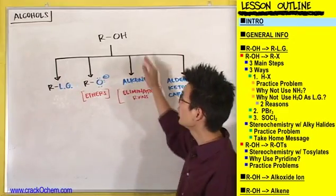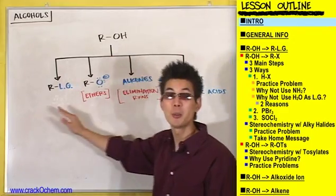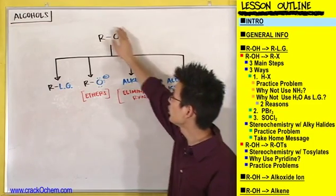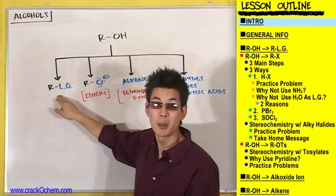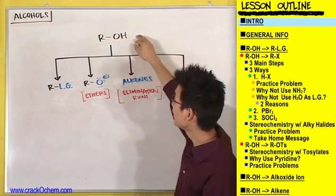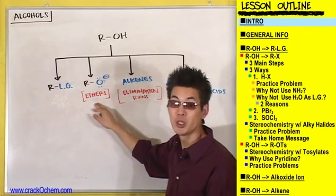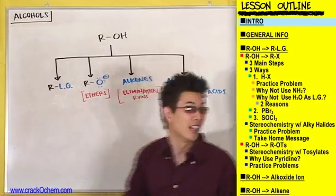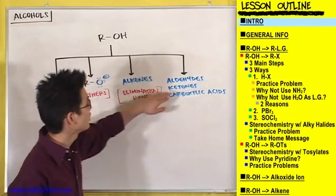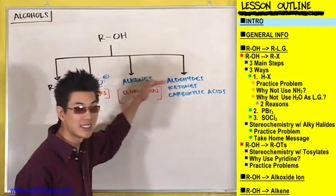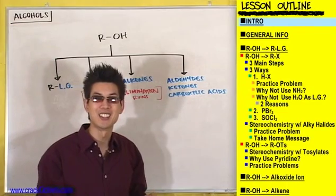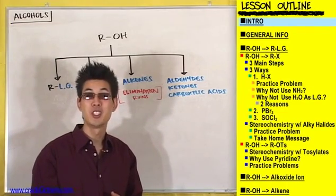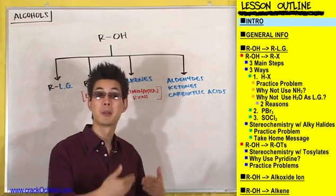Today we're going to be showing you how to turn an alcohol into a bunch of different types of compounds. We'll show you how to turn an alcohol into a compound that has a good leaving group, turn it into a nucleophile, turn it into an alkene, and lastly, turn it into aldehydes, ketones, and carboxylic acids.